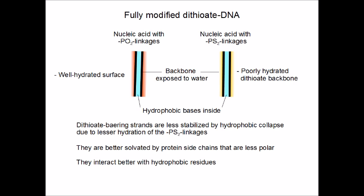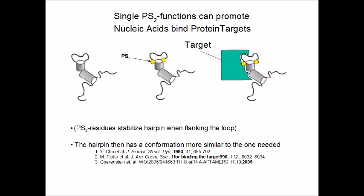There are structural differences between nucleic acids with a phosphodiester backbone and those bearing phosphorodithioates. DNA with a fully dithioate-modified backbone has a lower melting point than the parent DNA with the same sequence. The reason lies in the lower hydration of the dithioate backbone exposed to the solvent, which reduces the stability of the double helix. In RNA analogues, single phosphorodithioate modifications stabilize stem-loop structures.